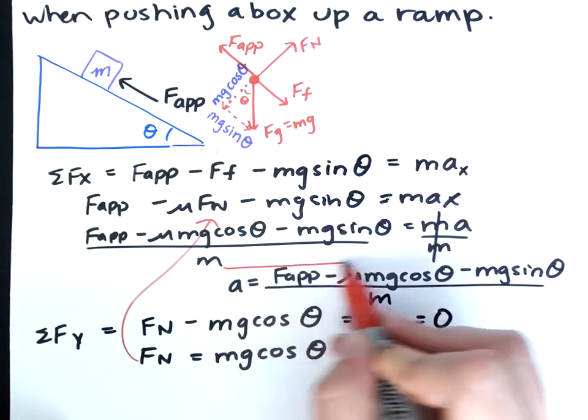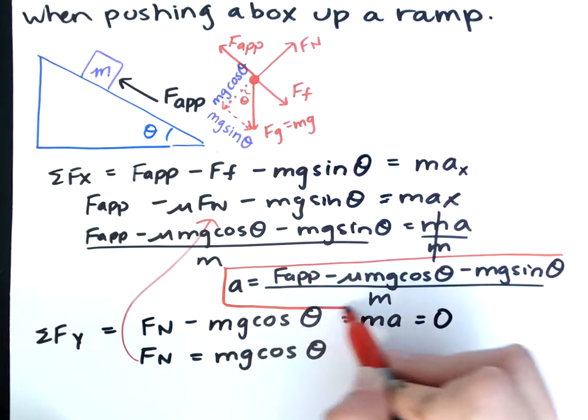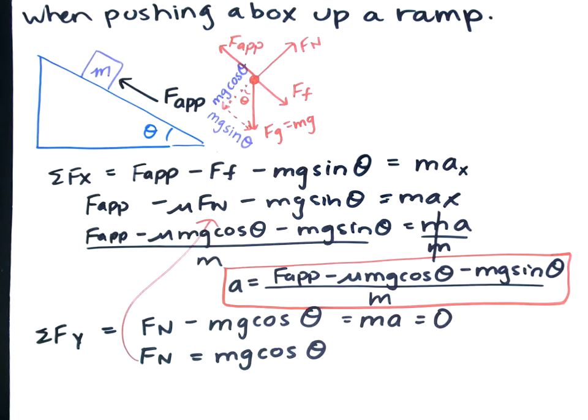So there's our derivation for acceleration. If you can do this with no numbers, you will have no problem doing it with numbers. Okay?